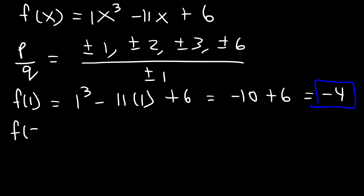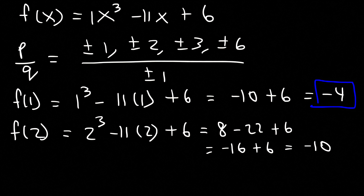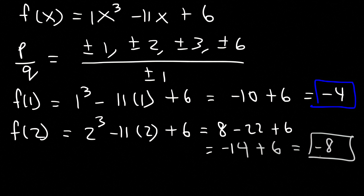Let's try 2. f(2) = 2³ - 11(2) + 6. 2³ = 8, 11 × 2 = 22. Correcting: 8 - 22 = -14, and -14 + 6 = -8. So f(2) is not equal to 0 either. Let's try 3.